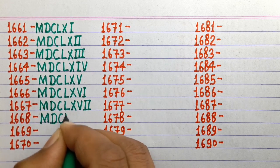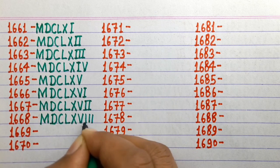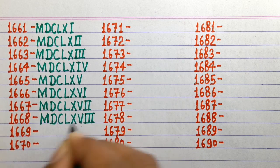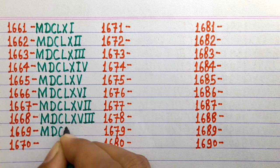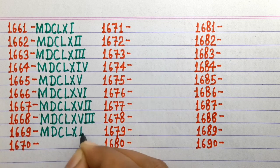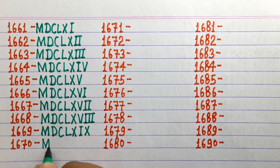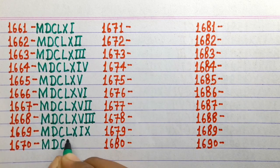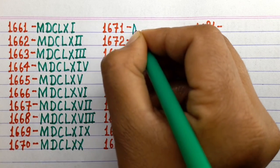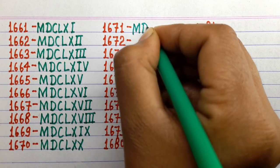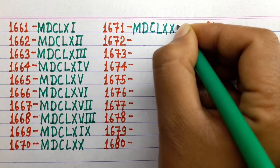1667 MDCLXVII, 1668 MDCLXVIII, 1669 MDCLXIX, 1670 MDCLXX, 1671 MDCLXXI.